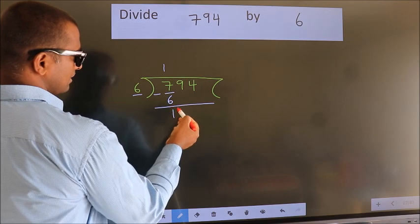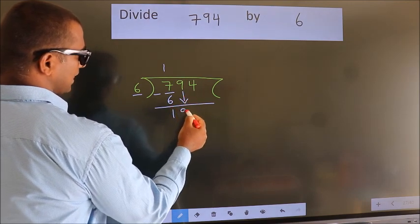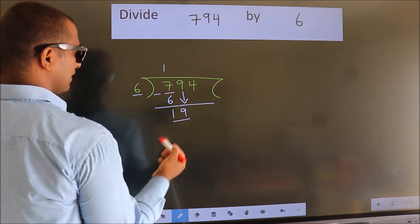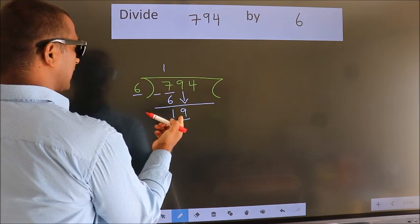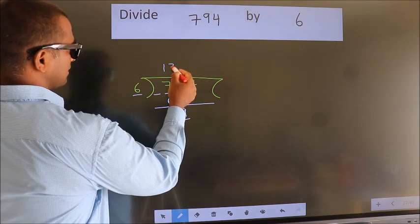After this, bring down the beside number. So 9 down, so 19. A number close to 19 in the 6 table is 6 times 3 is 18.